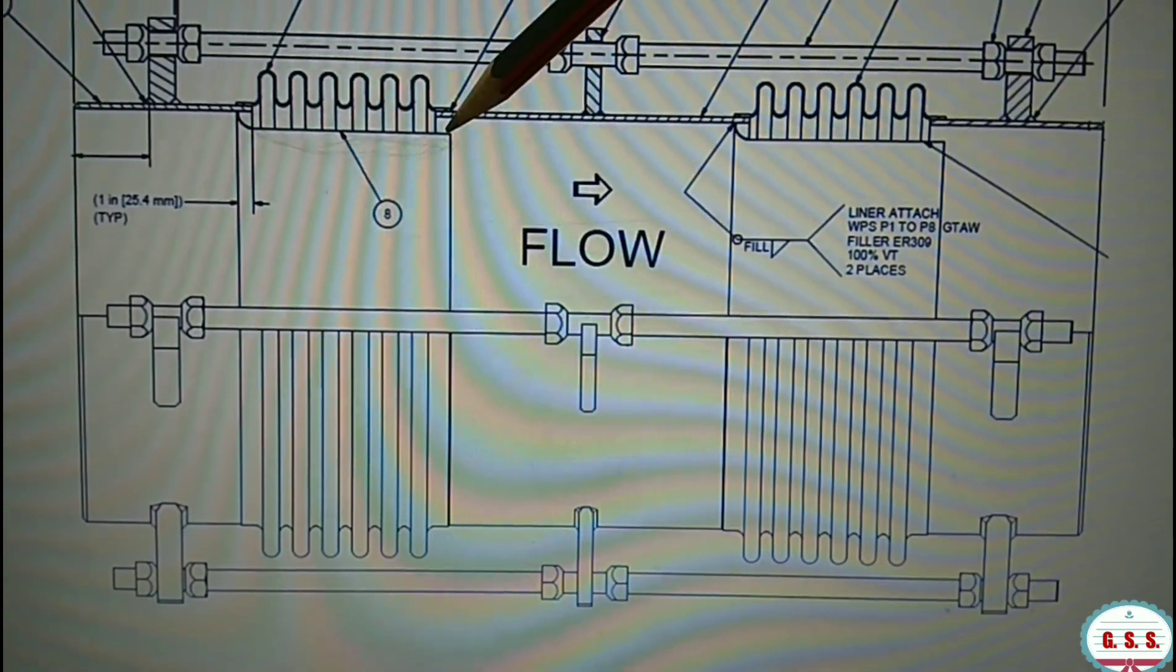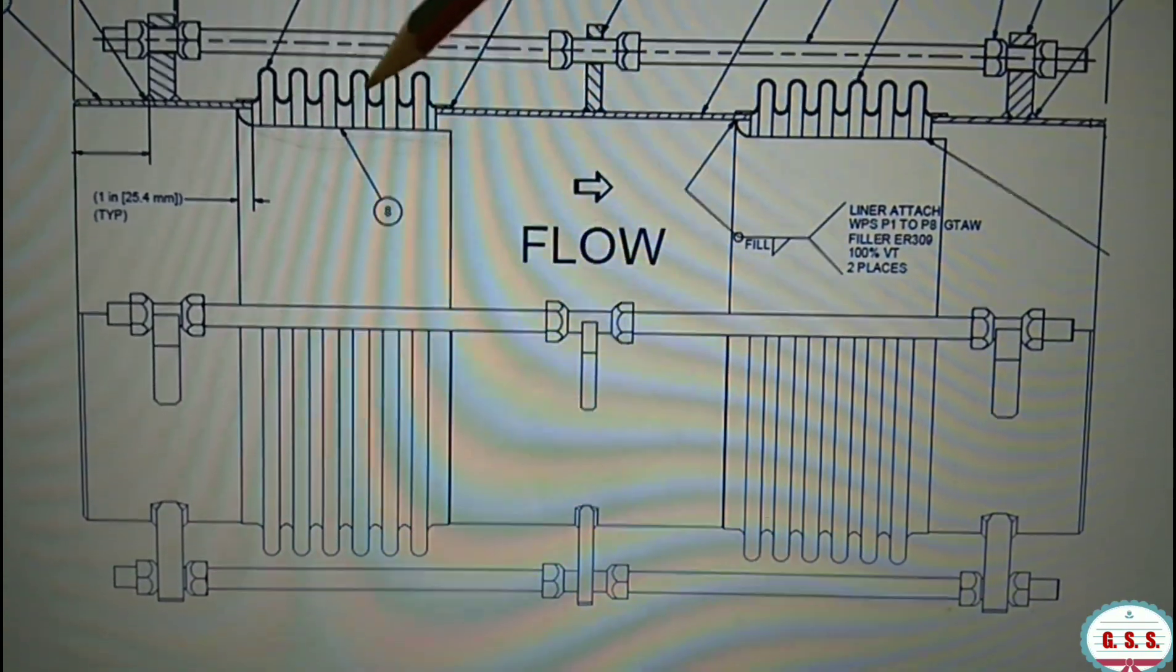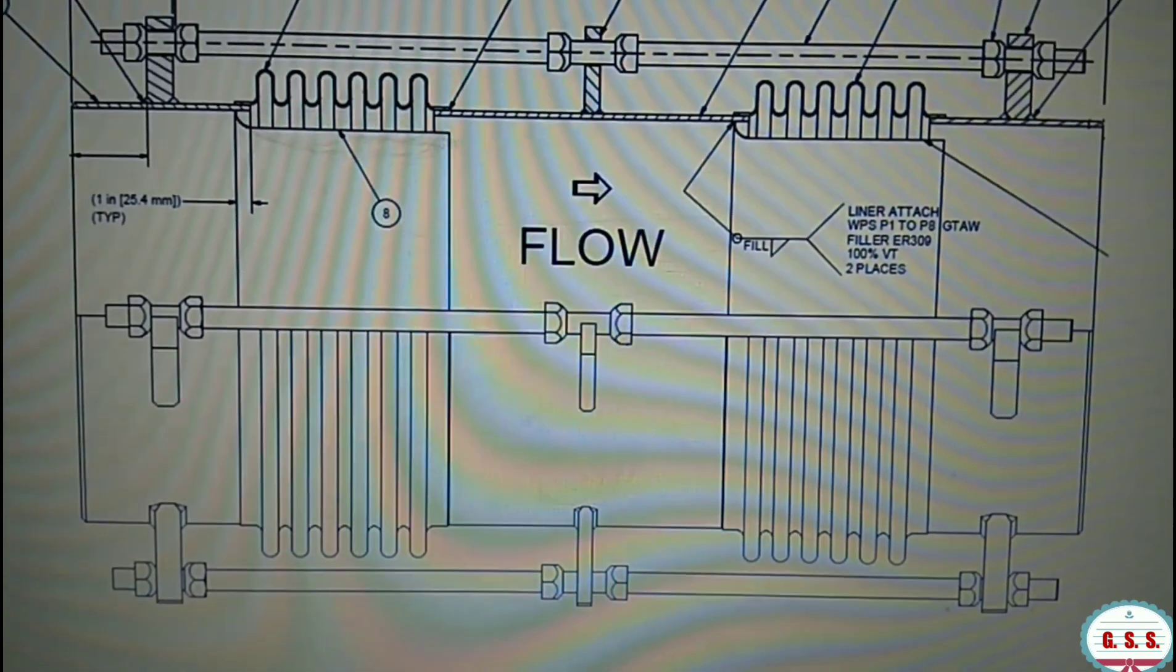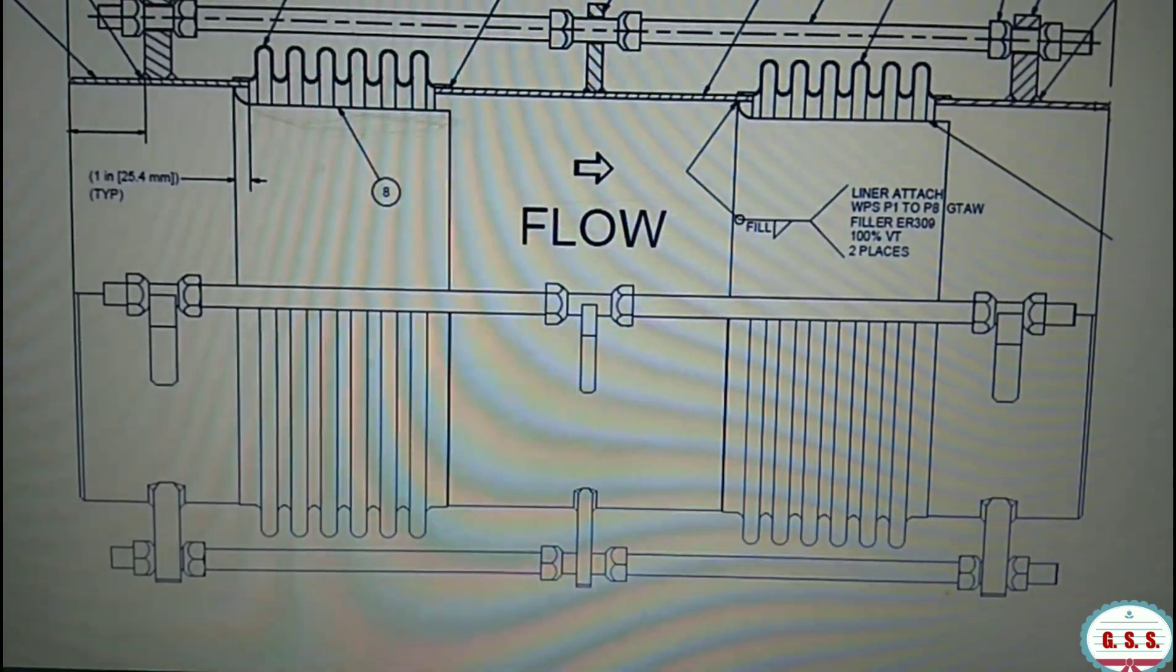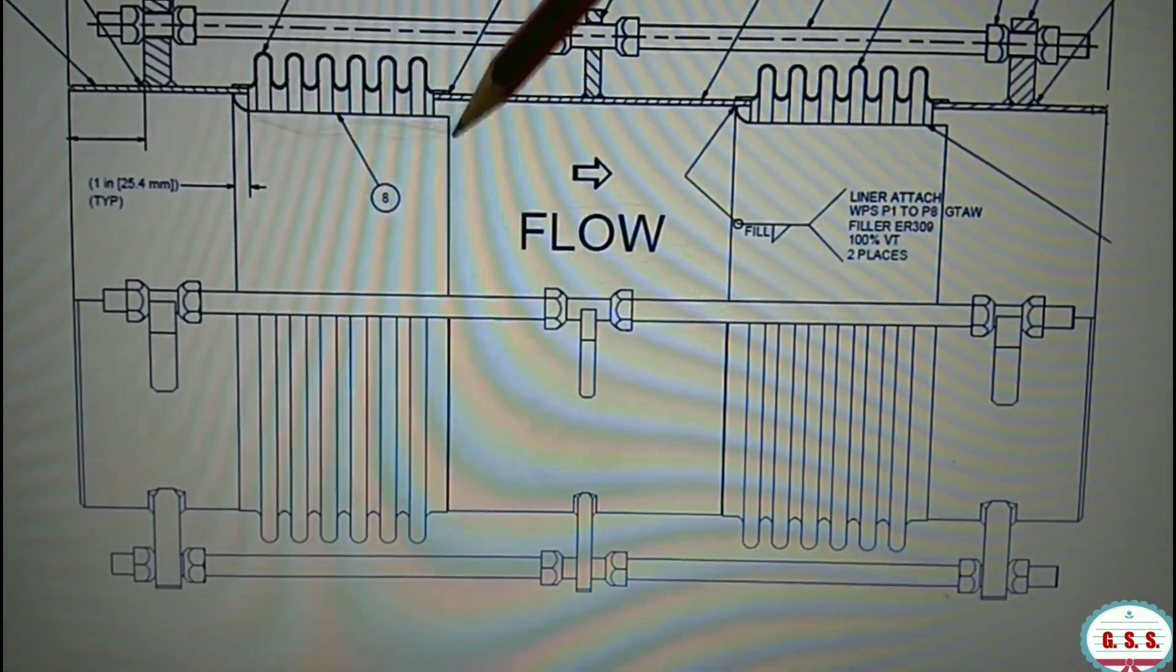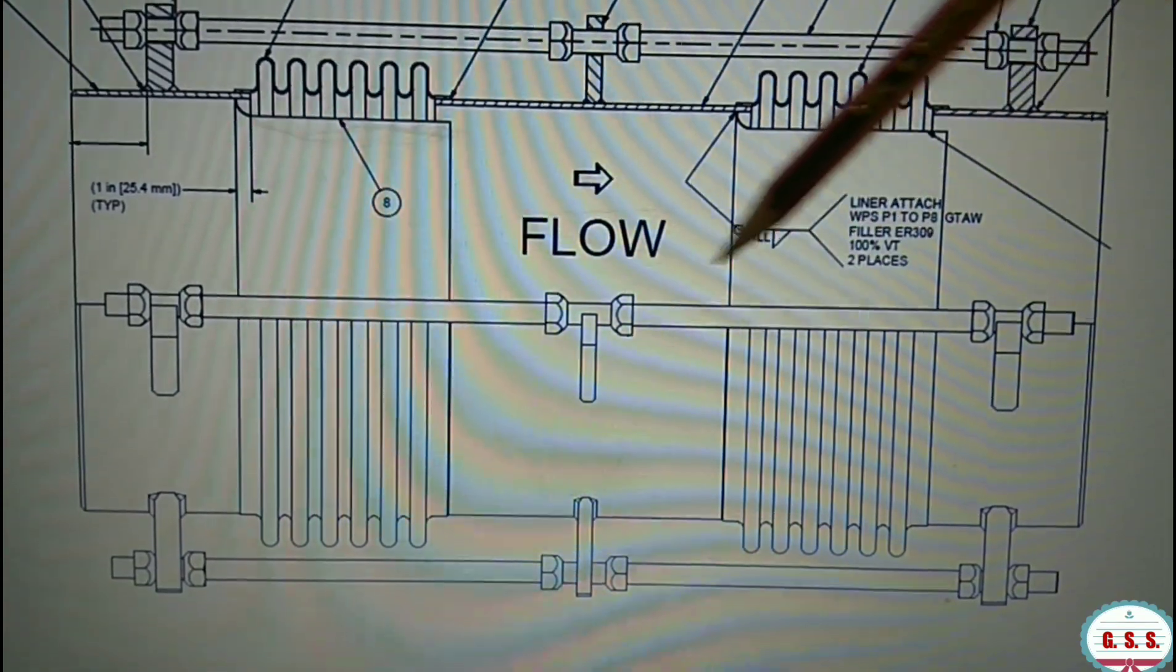This is the internal sleeve which protects bellows convolutions inside from fluid flow path. So this internal sleeve should be along the flow direction.